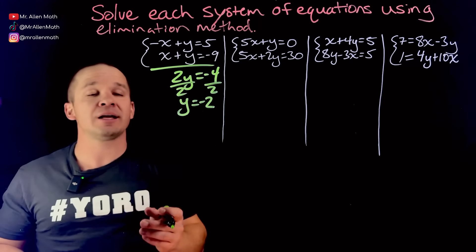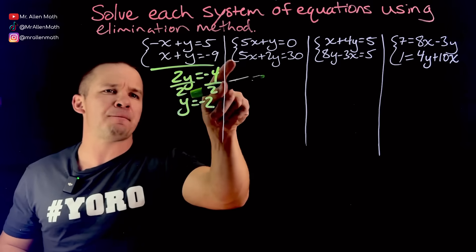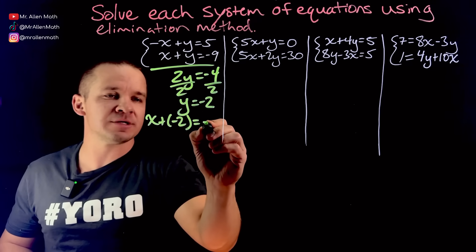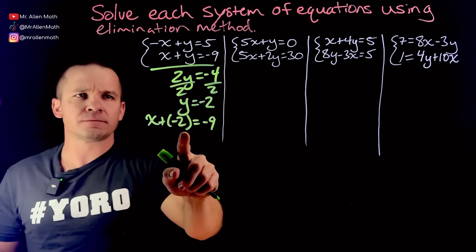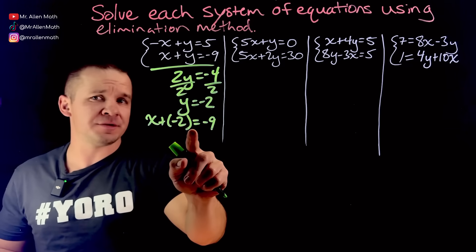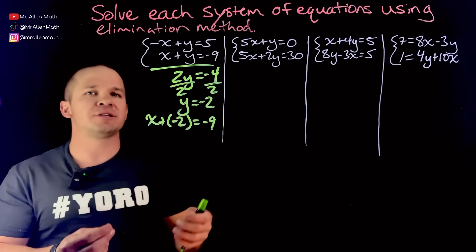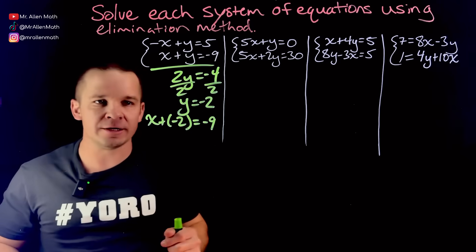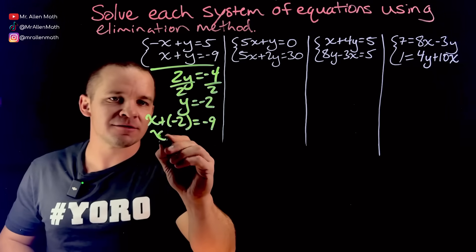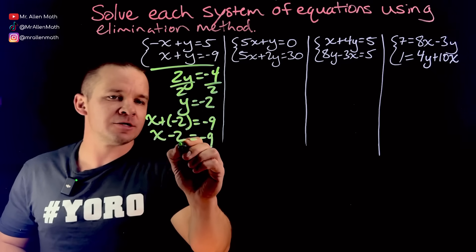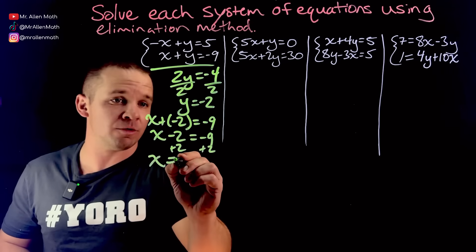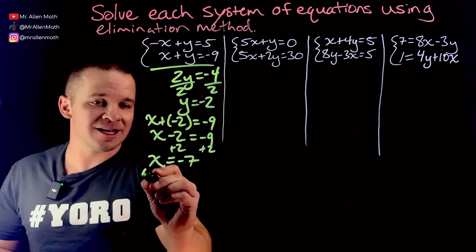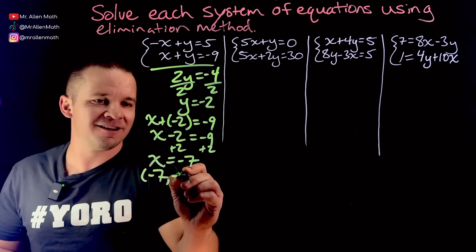So let's plug that negative two back in to either one of these and get our x. I'll use the bottom one here. So I'm gonna have x plus, and then negative two is going in for y, equals negative nine. Anytime I substitute in a value for a particular variable, I always like to throw parentheses around it. It shows that substitution that's occurring. And if there's any exponent, coefficient, whatever, I can deal with that by multiplying. I've got x minus two. So I'm gonna add two on both sides, and I get x equals negative seven.